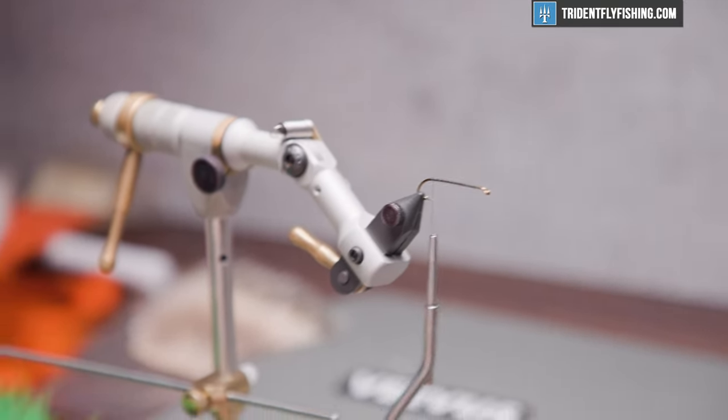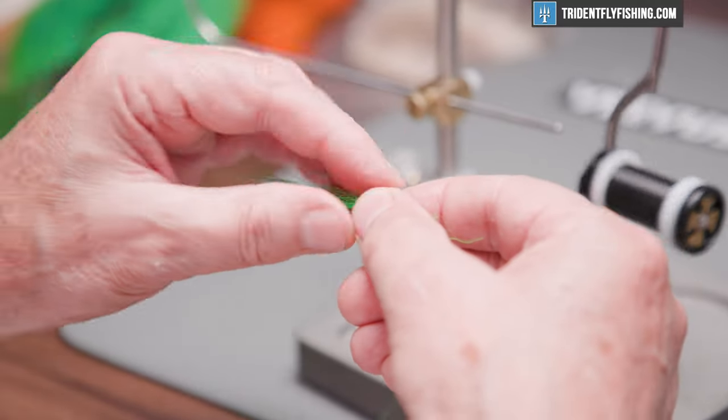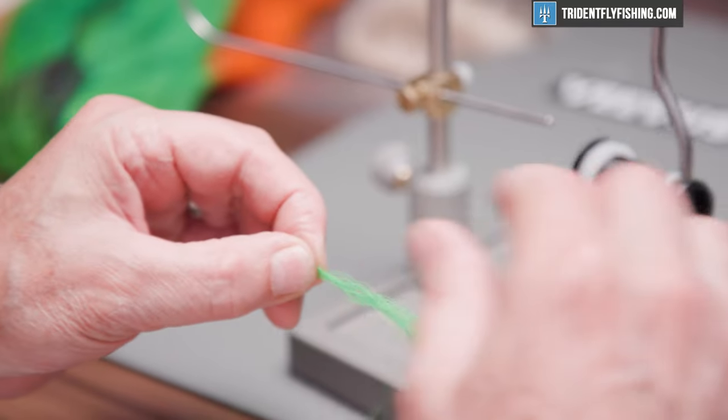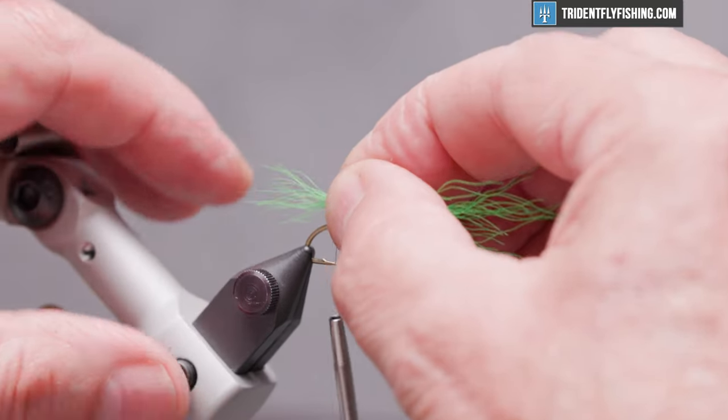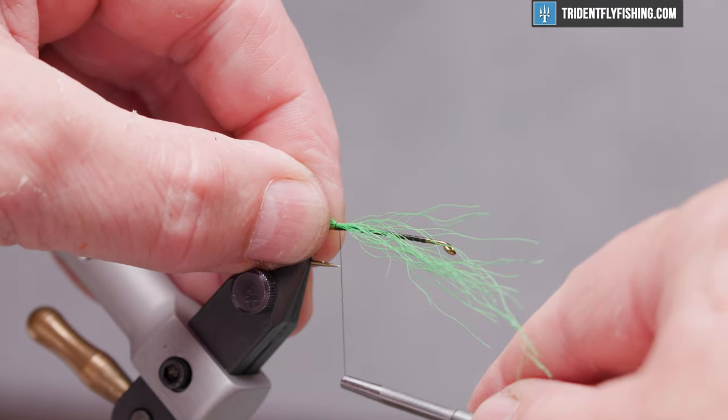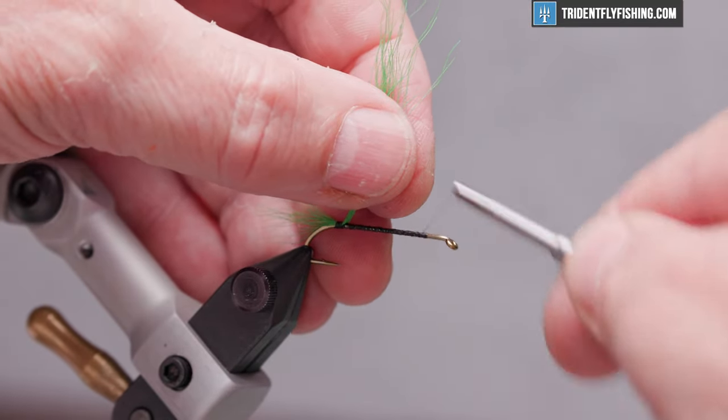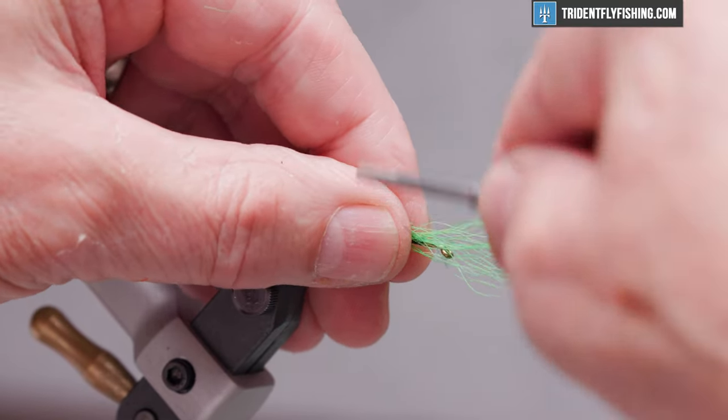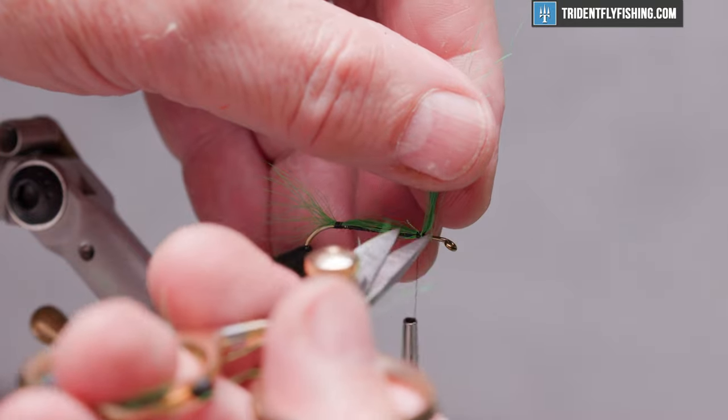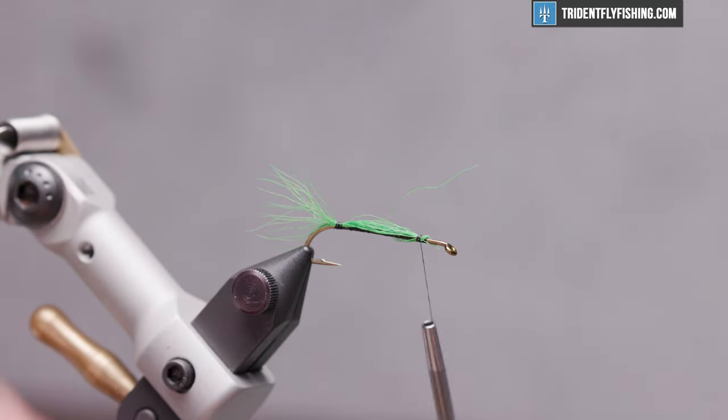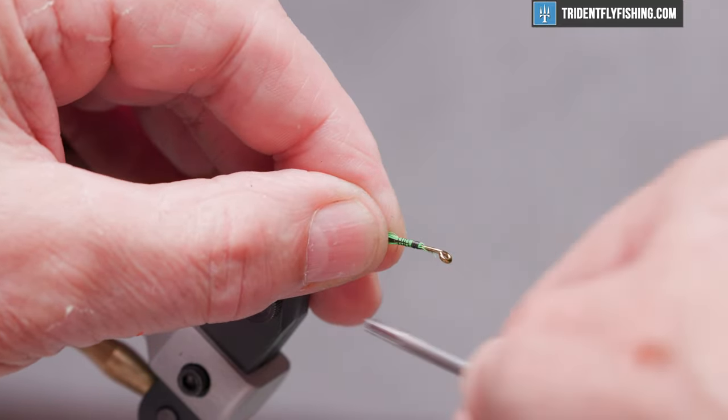First material we're going to tie in is the tail. It's going to be some green bucktail. It's going to be fairly sparse, so there's probably about 15 strands or so on the tail. You can hand stack this or you can stack it in a stacker, and so I don't know, maybe 20 strands. So again, a sparse tail. We want this tail to be about a hook width in length, maybe just a little bit longer. Tie that in, and again I like to run my thread back up to the hook eye, capture all my materials, cut off our excess, run our thread back down to the base of the tail.